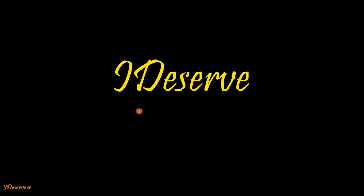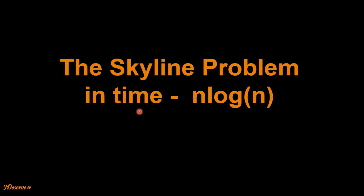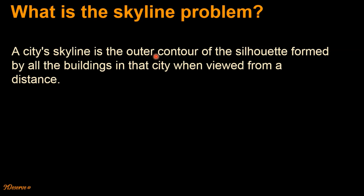Hi guys, this is Nilesh from IDzO. Today let's look at the skyline problem. We will solve this problem in time complexity of n log n. A city's skyline is the outer contour of the silhouette formed by all the buildings in that city when viewed from a distance.